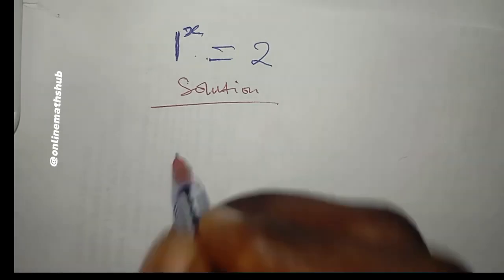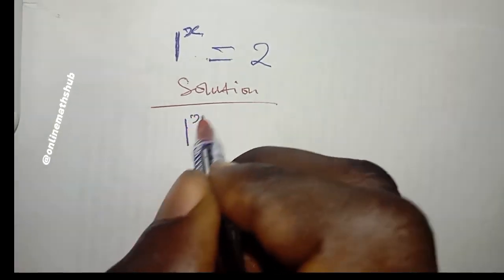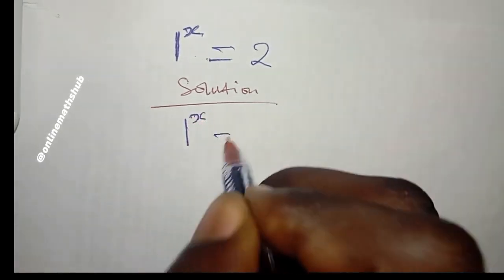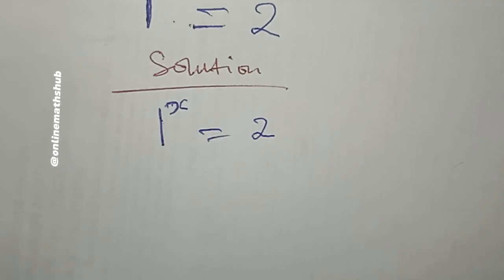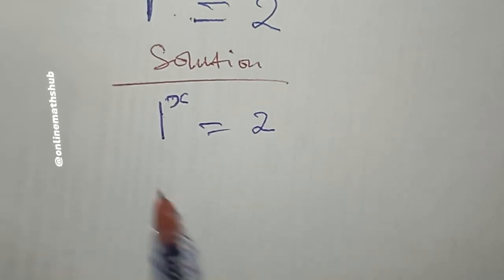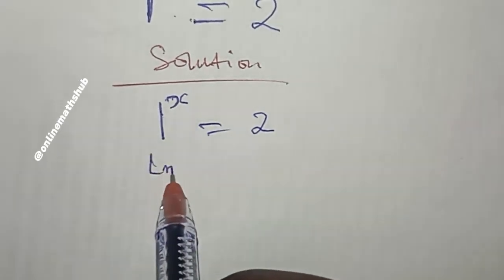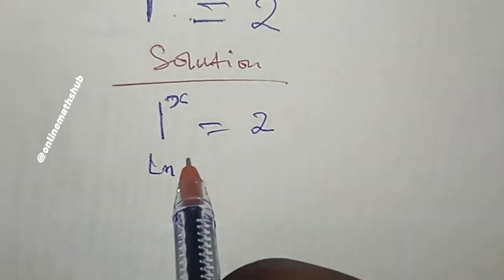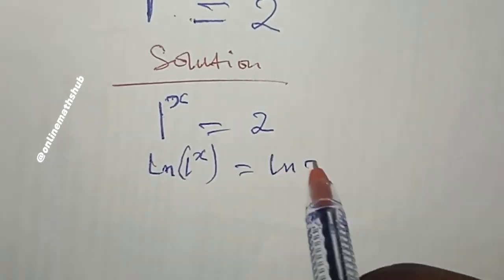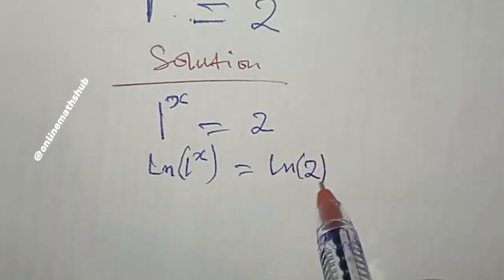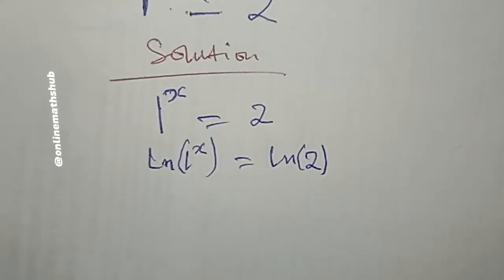The question we are solving is 1^x = 2. To find the real solution to this problem, one of the most basic things to do is to take the natural log of both sides. If I do that, I get: ln(1^x) = ln(2). The next thing I want to do is utilize one of the properties of natural log.